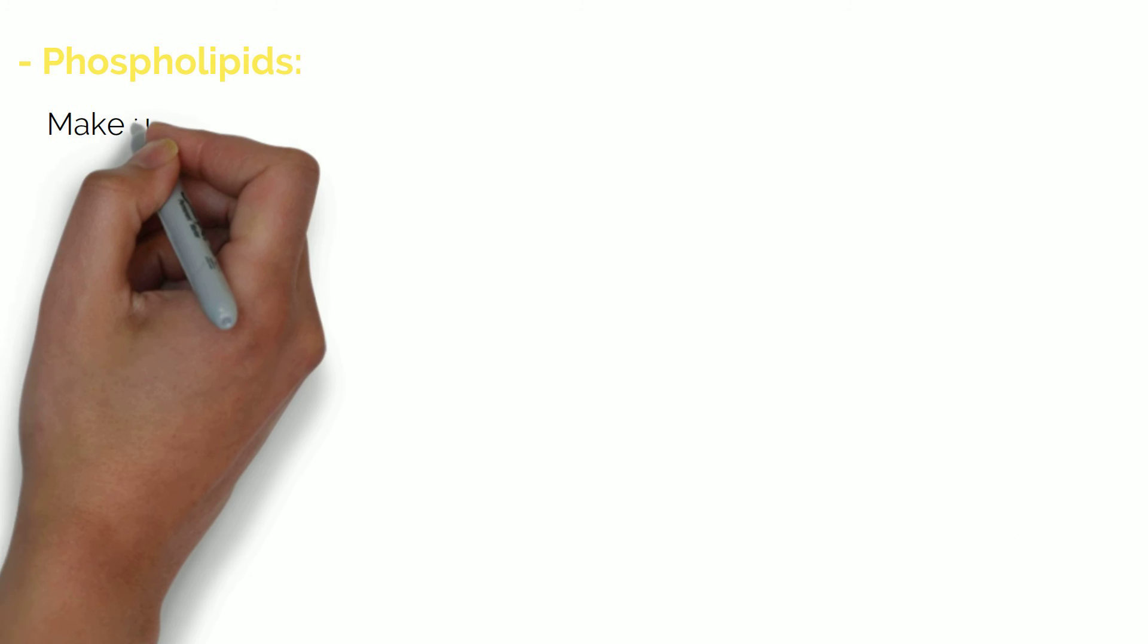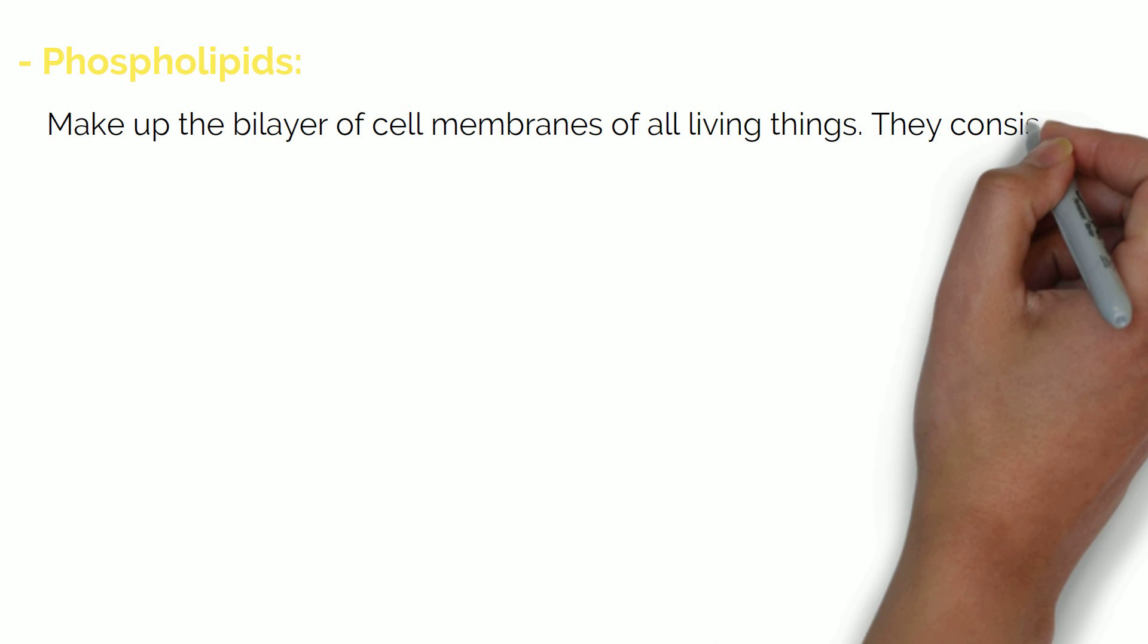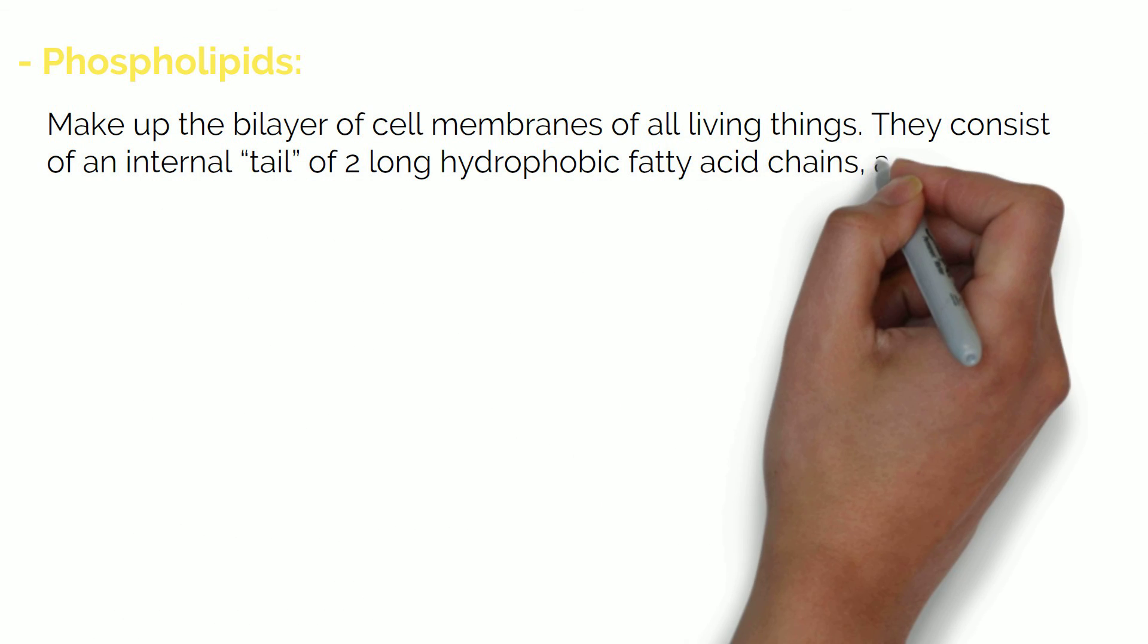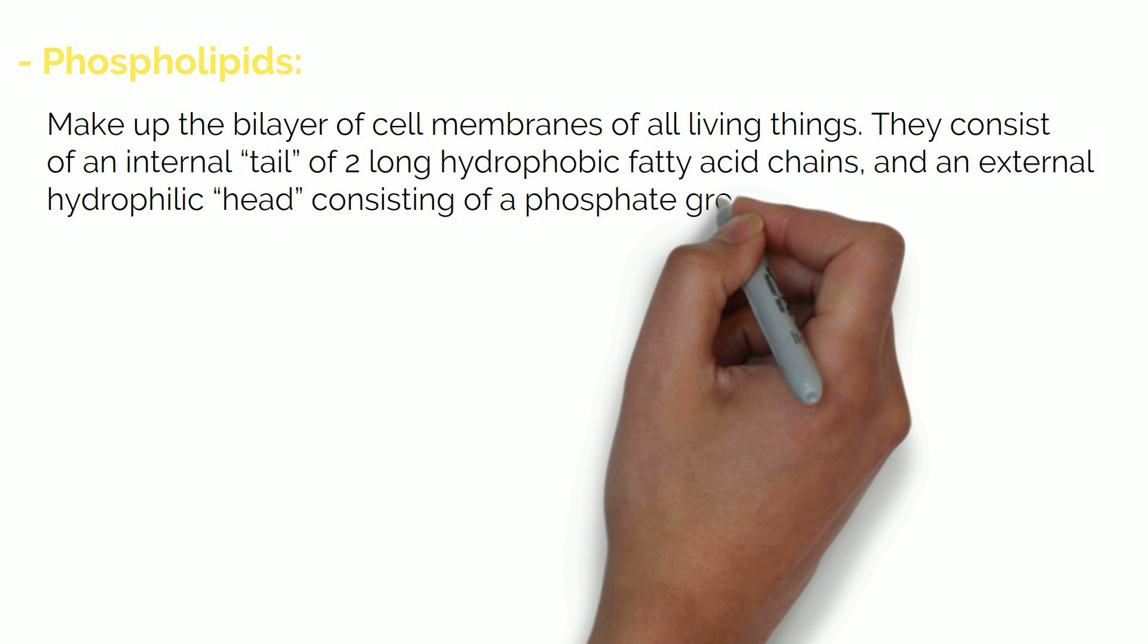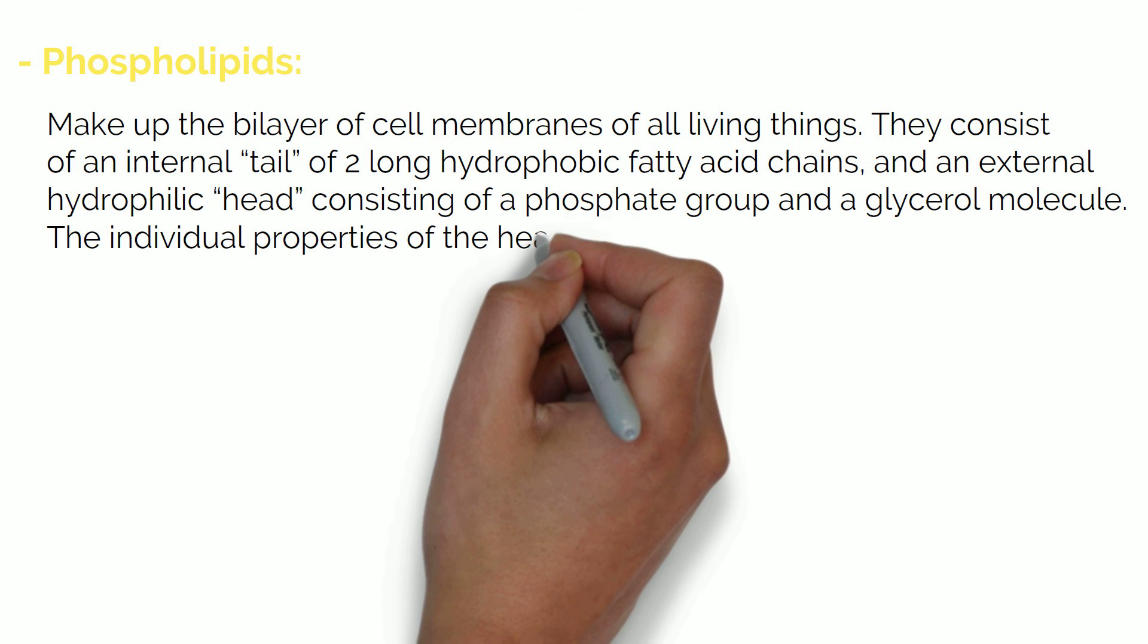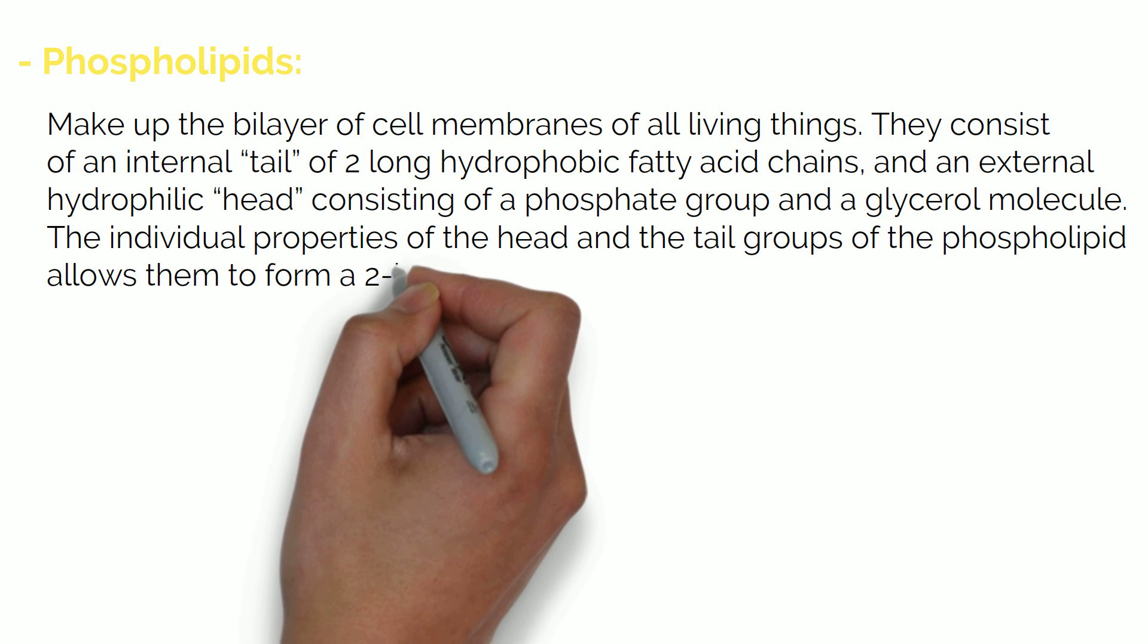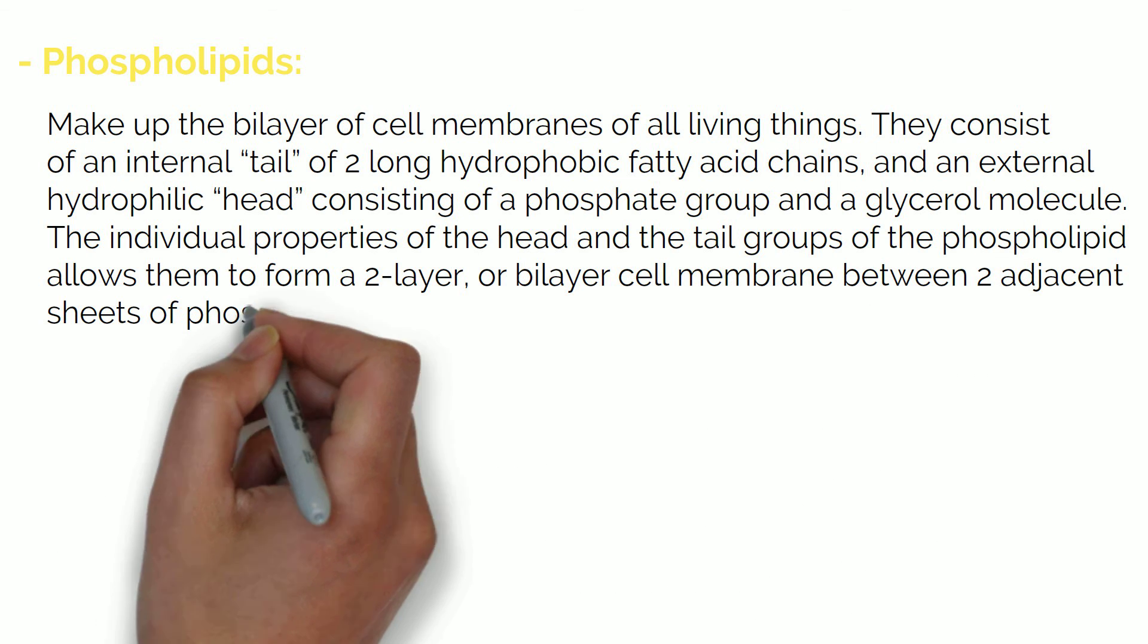Phospholipids make up the bilayer of cell membranes of all living things. They consist of an internal tail of two long hydrophobic fatty acid chains and an external hydrophilic head consisting of a phosphate group and a glycerol molecule. The individual properties of the head and the tail groups of the phospholipid allows them to form a two-layer or bilayer cell membrane between two adjacent sheets of phospholipids.